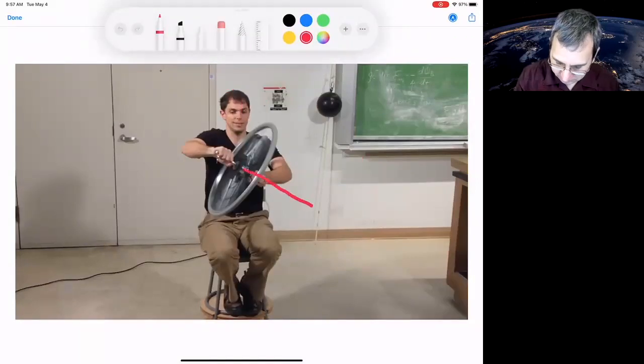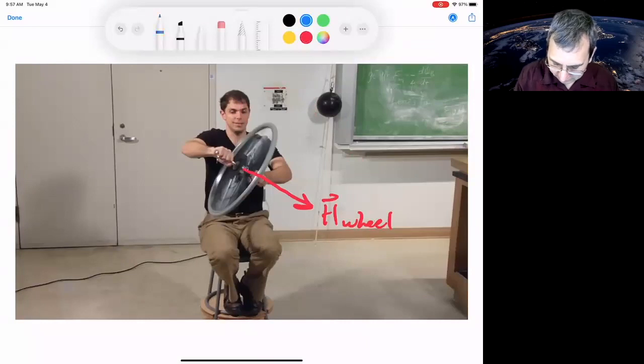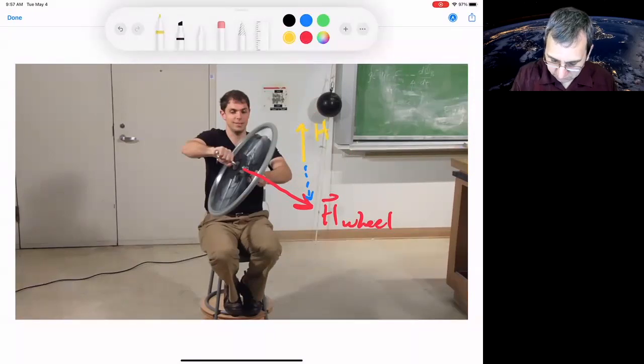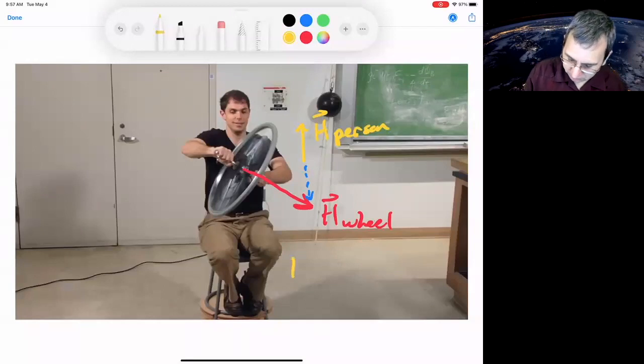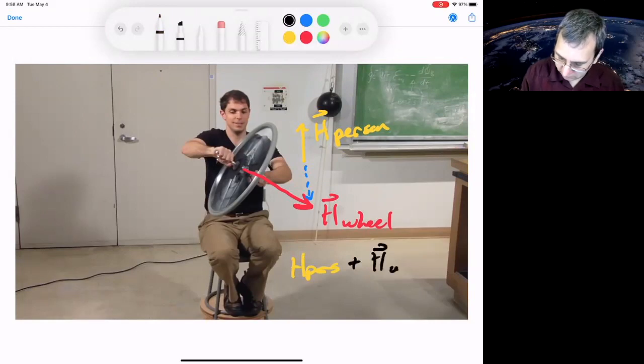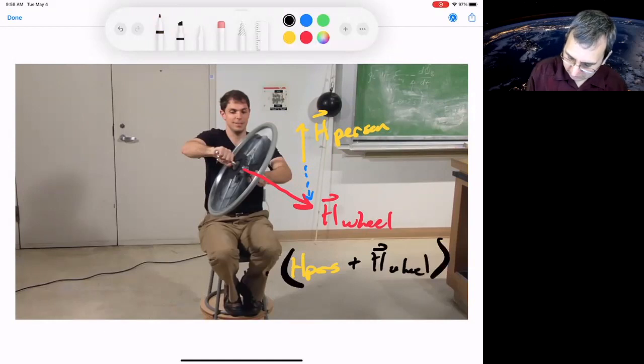So if he twists this down, H of the wheel, and that means there's this slight downward component, and to compensate, he'll have to have a positive component. So this is H for person. So that the total equals zero. H person plus H wheel, at least in that vertical direction. So dotted with Z hat.